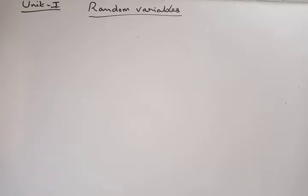In the last class we completed Bayes theorem problems. The next topics in Unit 1 are: random variables and types of random variables, probability mass function, probability density function, and mathematical expectation. These five topics are there, and today we'll discuss a few of them.